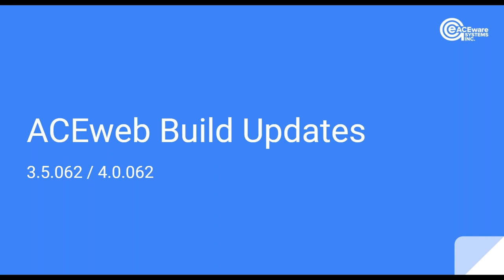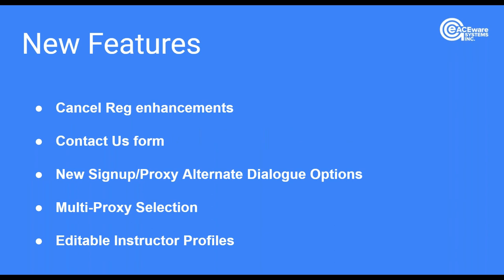Thanks Sharon. We're going to talk about what we've been working on in build 62 for AceWeb. We've been keeping Stein very busy as always. A quick glance at new things: enhancements to the cancel reg feature, a new contact us form that Cheryl put together, new alternate dialogue configuration options for pop-up messages during proxy registration or the signup page, multi-proxy selections, and editable instructor profiles.